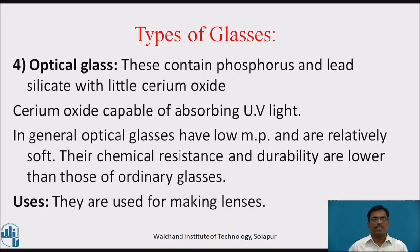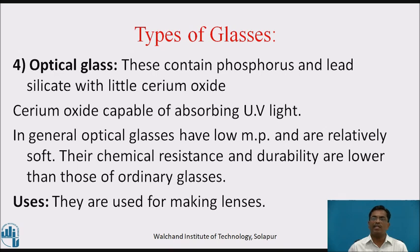Fourth type of glass is optical glass. This contains phosphorus and lead silicate with a little cerium oxide. Cerium oxide is capable of absorbing ultraviolet radiations. In general, optical glasses have low melting point and are relatively soft. Their chemical resistance and durability are lower than those of ordinary glasses. Uses: they are used in making lenses.